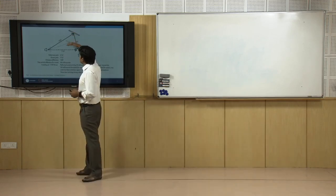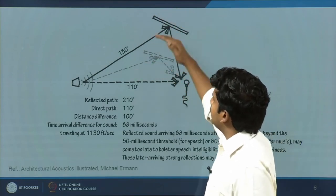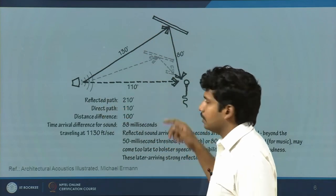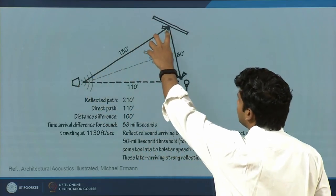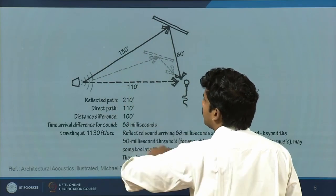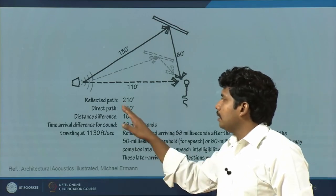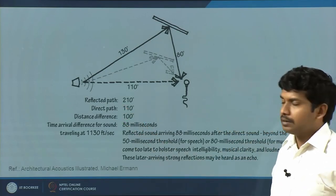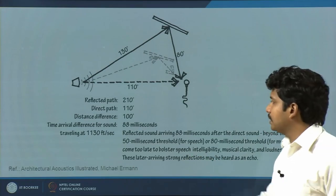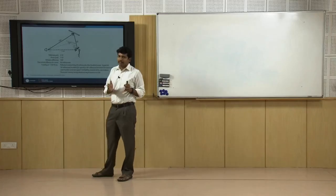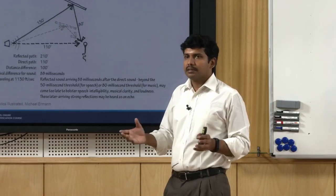Now let us push this reflector up a little bit - the height is increased. The tilt is retained but the height varies. The direct path remains at 110 foot whereas the reflected path is now 130 plus 80 feet. Subtracting 110, you have a distance difference of 100 foot, which means the time difference between the direct and reflected sound is 88 milliseconds. For speech performance, with a 50 millisecond threshold, it is excess by 38 milliseconds - which is not desirable.